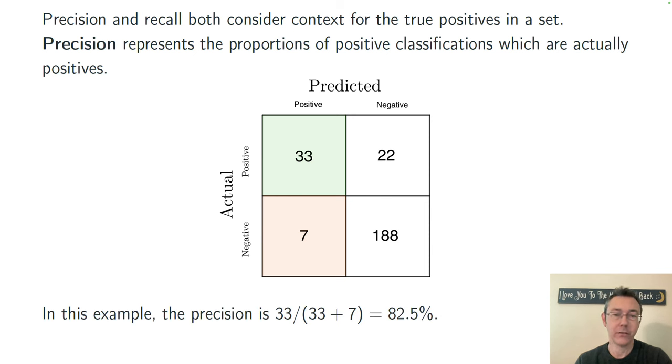So in this case, there's 40 positive predictions, 40 positive classifications, and of those, 33 are actually positive. So we have a precision rate of 82.5%.